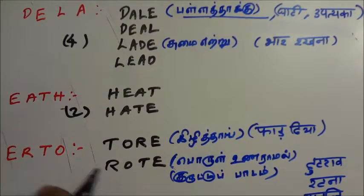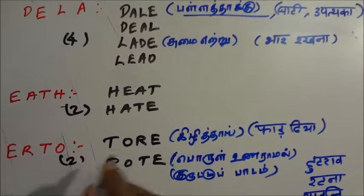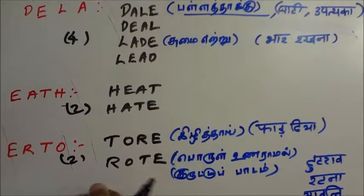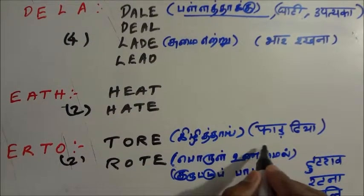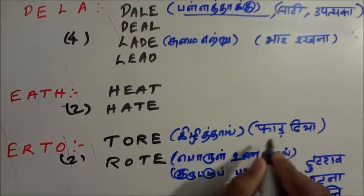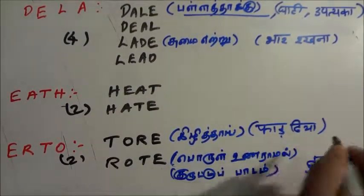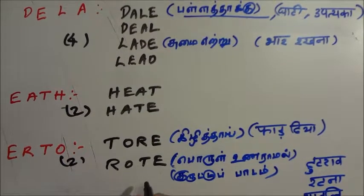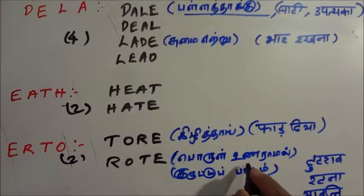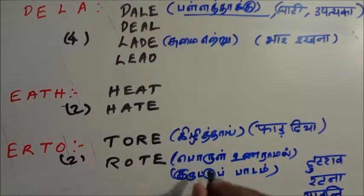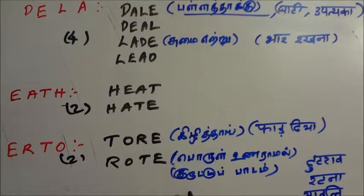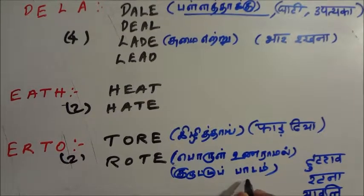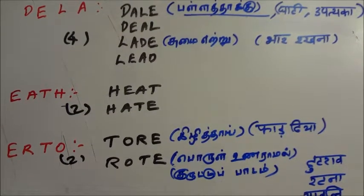E-R-T-O - two words can be formed from this: TORE and ROTE. TORE means to tear something (in Hindi: faadna; in Tamil: kili). ROTE means to learn mechanically without understanding - rote learning, studying by rote method without proper understanding.